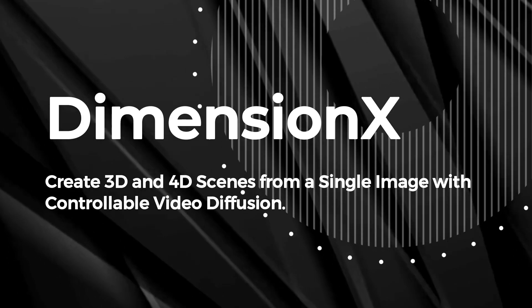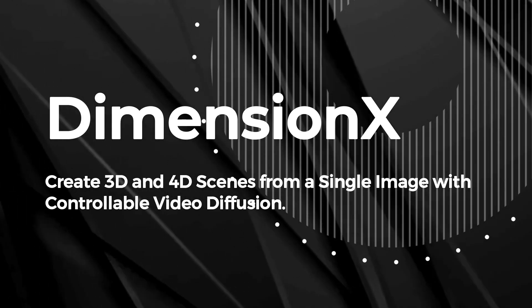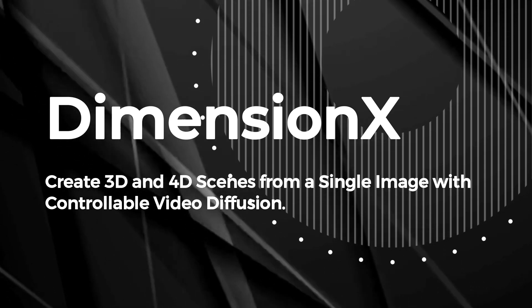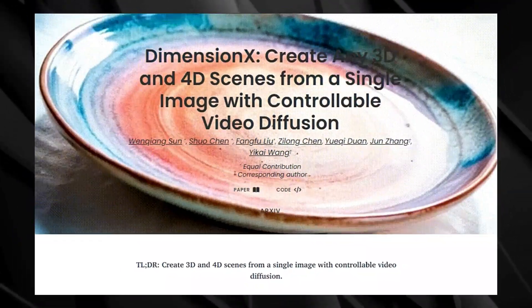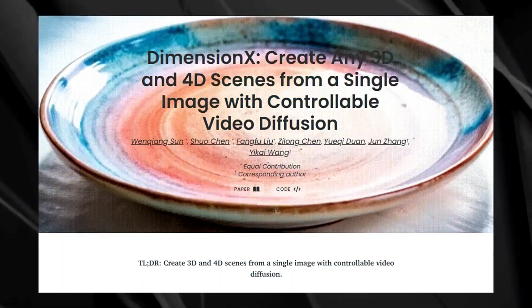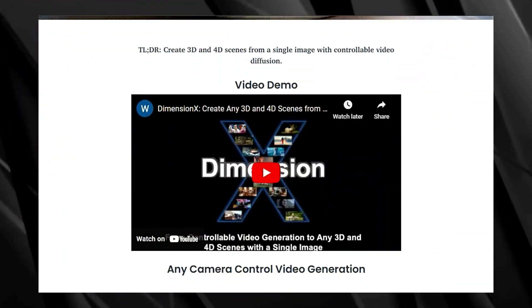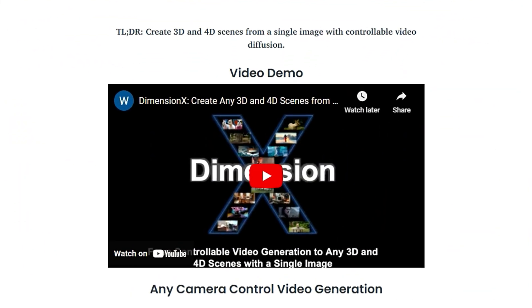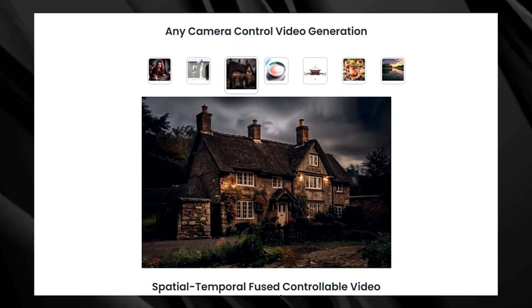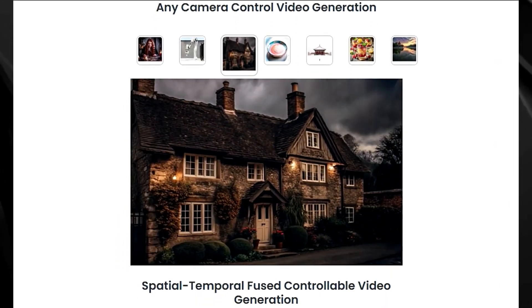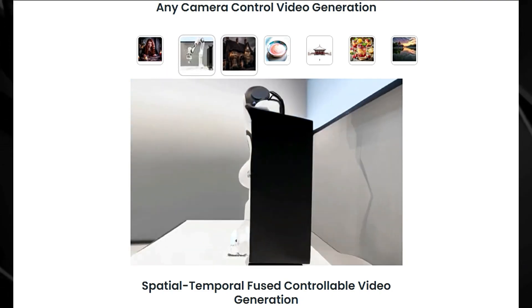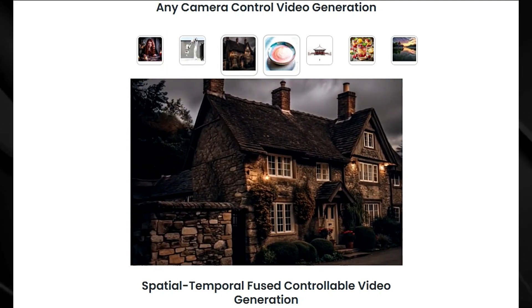Paper number one: Dimension X — Create 3D and 4D scenes from a single image with controllable video diffusion. What if you could take a single image and turn it into a full 3D scene that you could move around in? That's what Dimension X lets you do. It's all thanks to a powerful technique called controllable video diffusion. You give the model a starting image and some instructions and it uses these instructions to imagine what the scene would look like from different angles, effectively building a 3D representation.